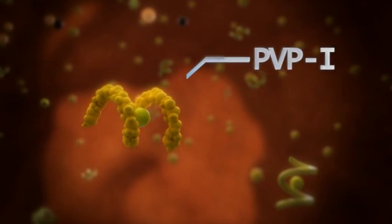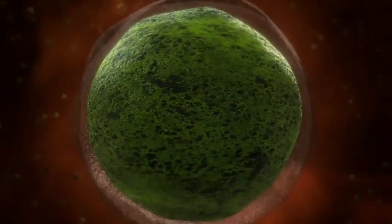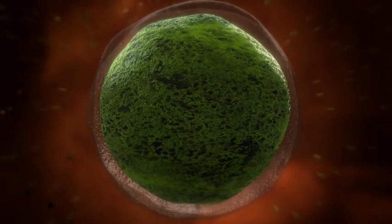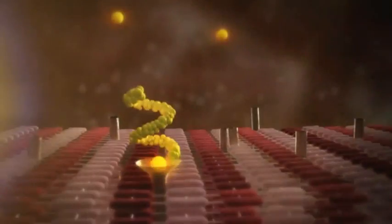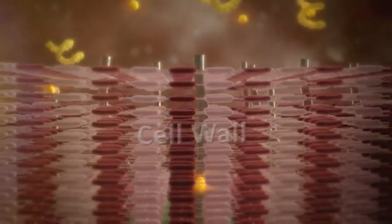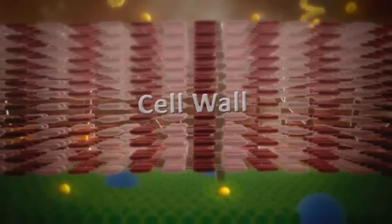The povidine carries the iodine to the specific binding site of the pathogen. A fraction of the iodine will be released as free iodine. These free iodine are delivered directly to the cell wall or membrane of the pathogen.